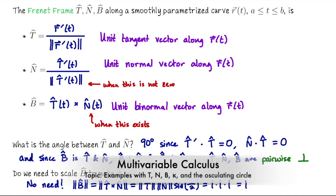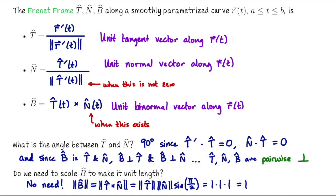In this lecture we're going to pick up with the ideas we left off with in the previous lecture and talk more about T and N. In particular we're going to do some examples of computing these unit vectors as well as the curvature and the center of the osculating circle.